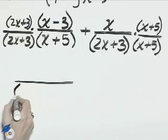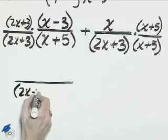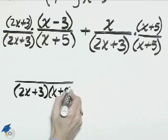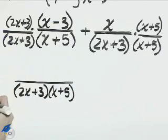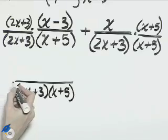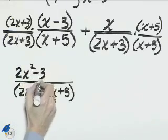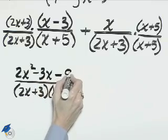The denominator is 2x plus 3, that quantity times the quantity x plus 5. The numerator is the quantity 2x plus 3 times the quantity x minus 3. That's 2x squared minus 3x minus 9.